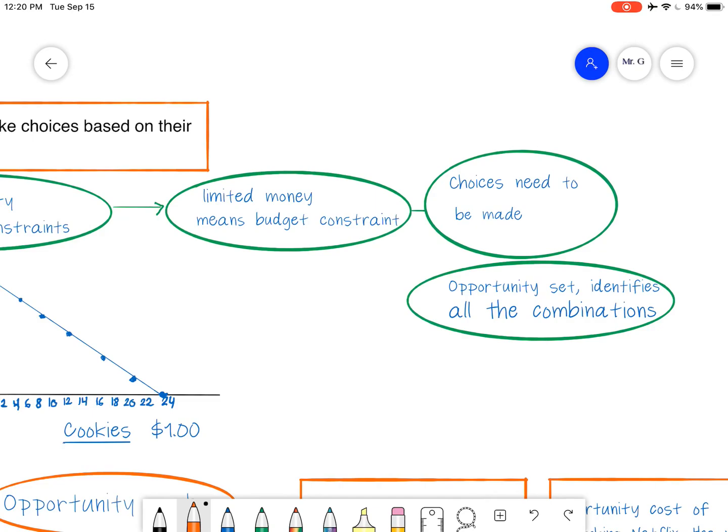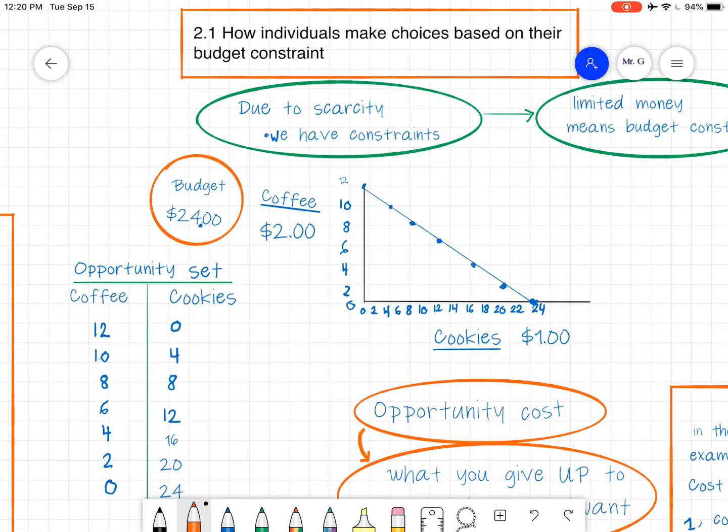So limited money, and that applies for everyone, even the richest people in the world. They just have higher budget constraints. Limited money means budget constraints. Choices need to be made. The opportunity set identifies all the different combinations. So let's have a look at what basically the opportunity set is.